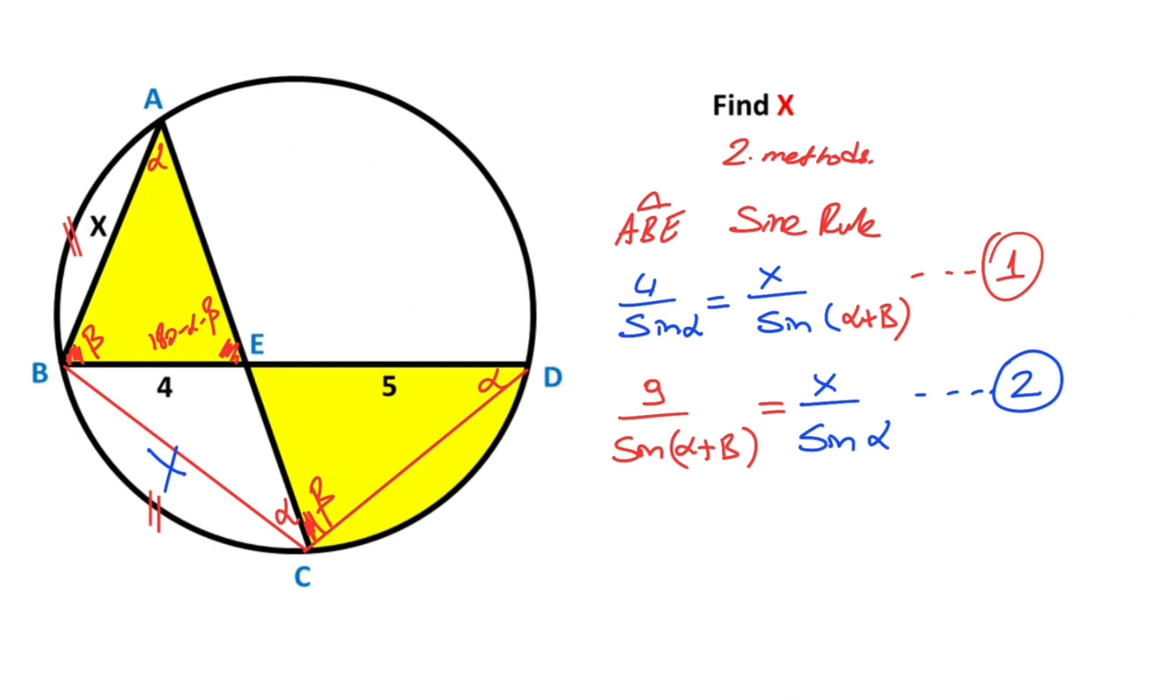After that if you multiply these two equations together like this, so 4 over sine alpha times 9 over sine alpha plus beta must be equal x over sine alpha plus beta times x over sine alpha.